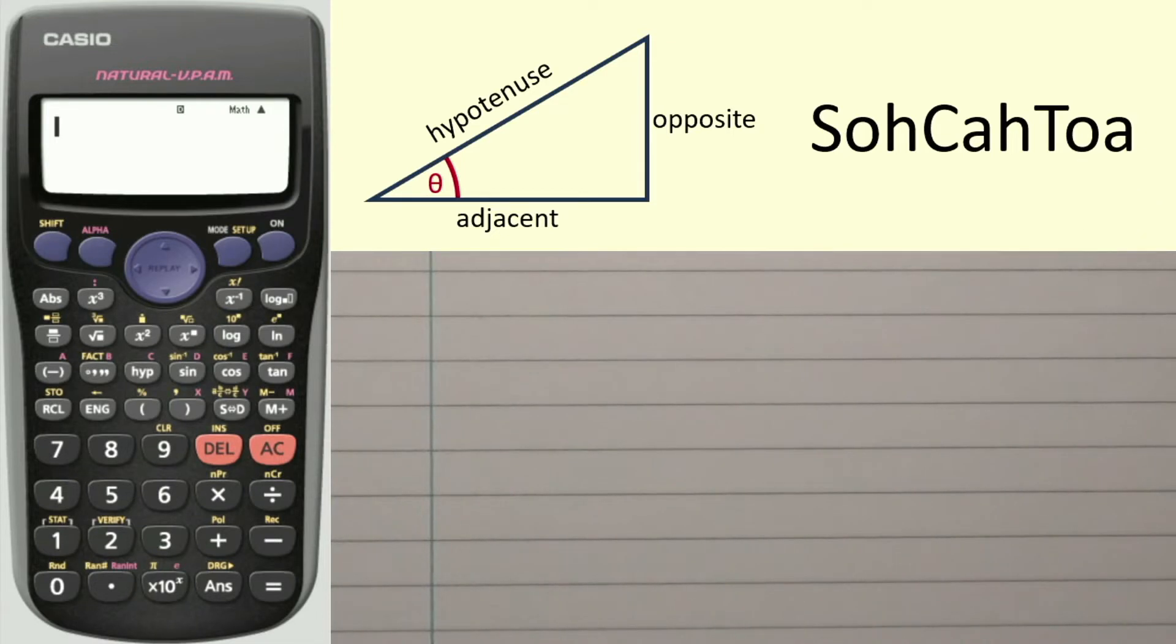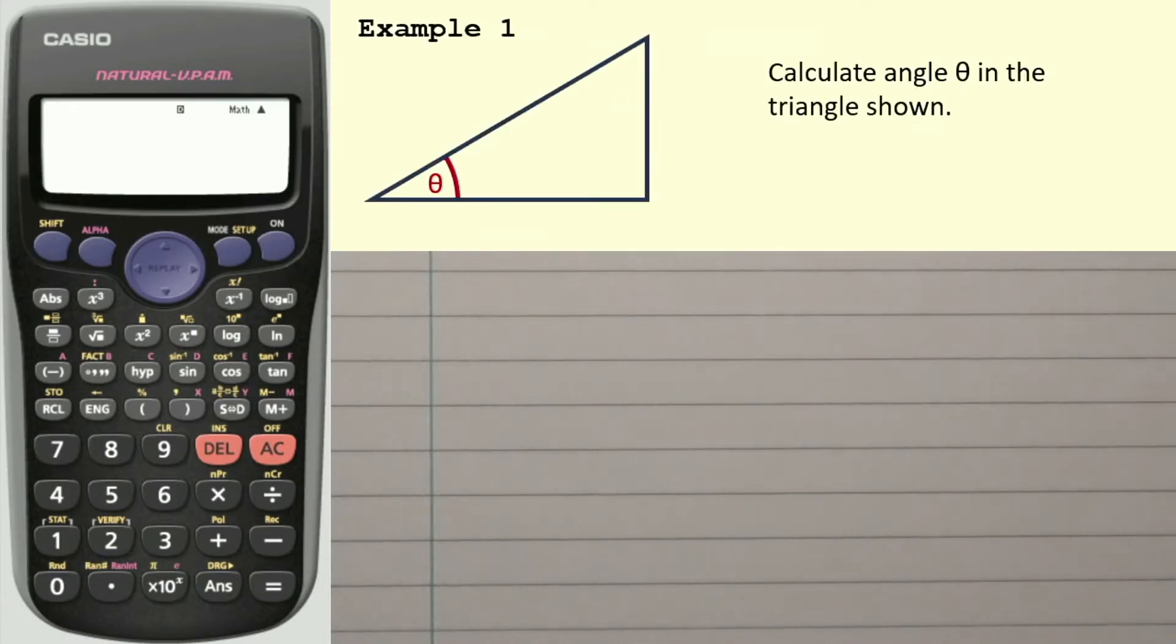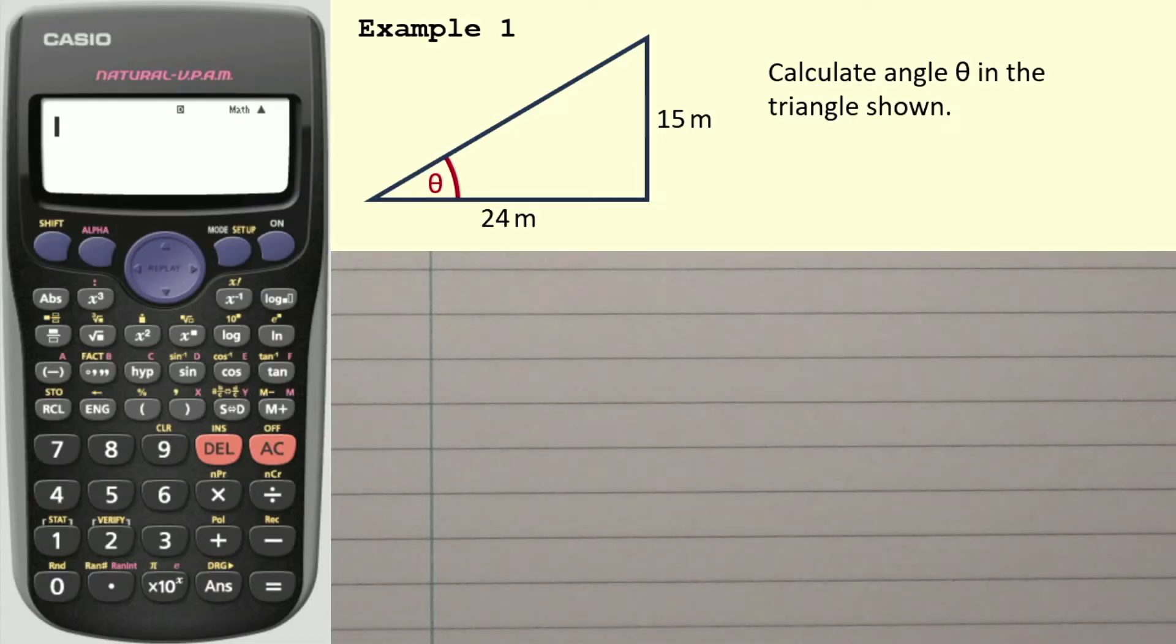Let's work through four examples and hopefully by the end of this you will have a better idea of how to do it. Here's the first one. The question says calculate angle theta in the triangle shown. First of all, we've got this side here. Hopefully you can see that that is opposite the angle, so that's the opposite side. And this is the adjacent. Remember that the longest side, and we don't know that here, this is the hypotenuse. Now what links the opposite and the adjacent is of course the tan function.